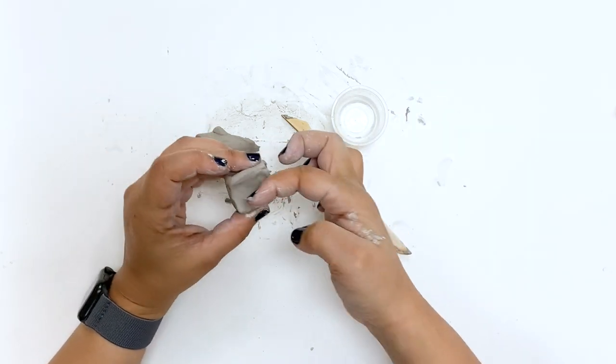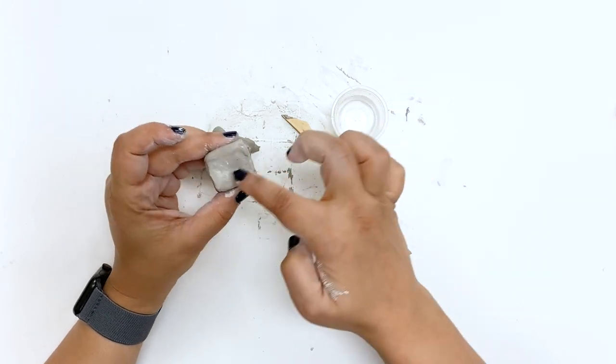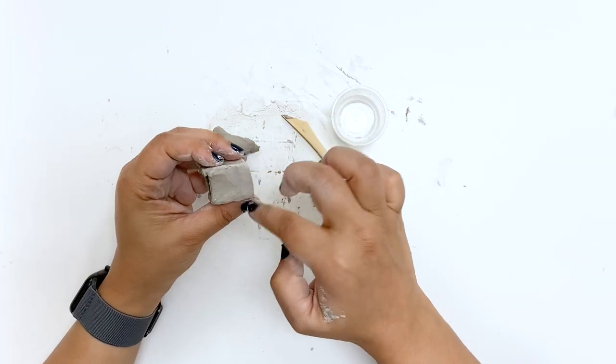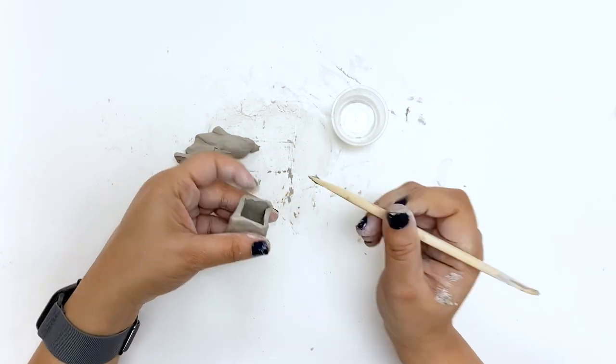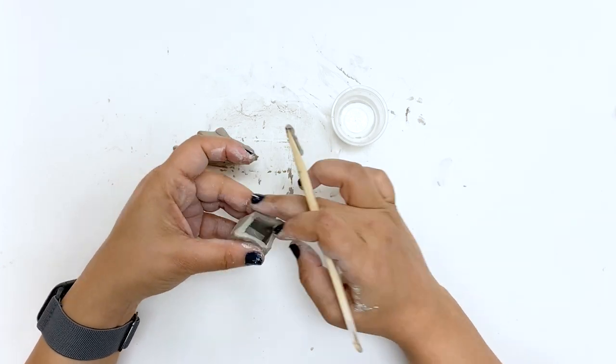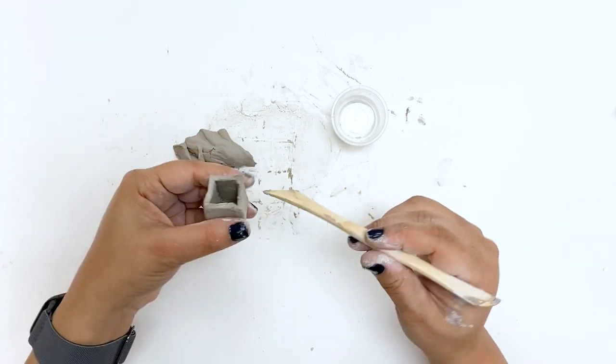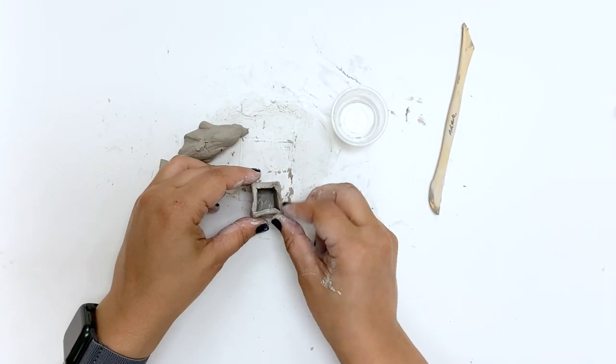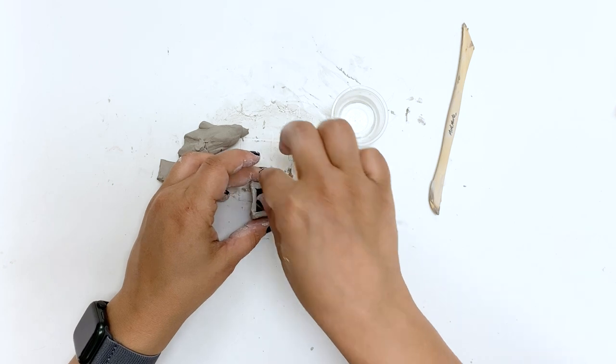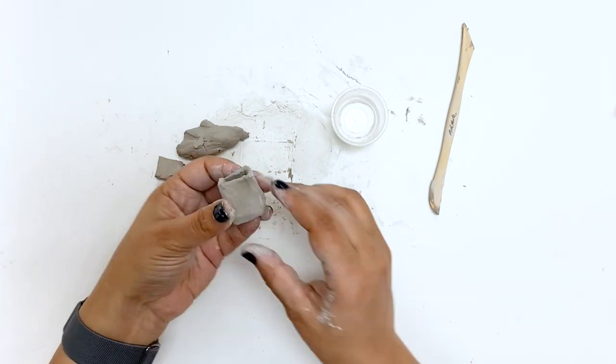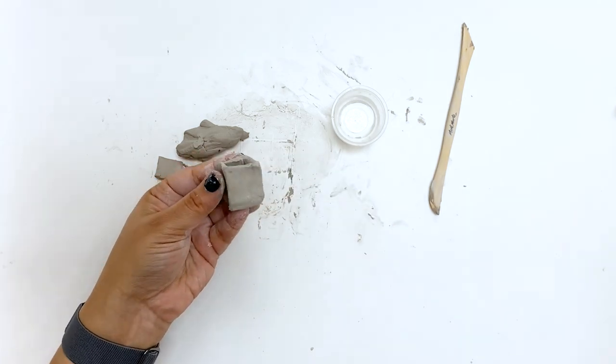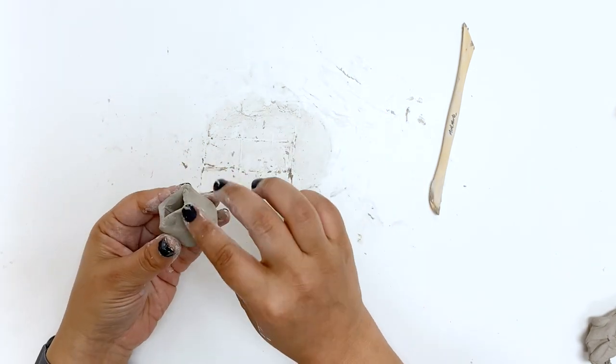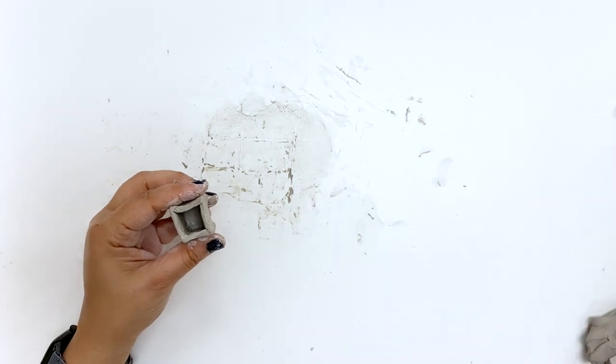You might be noticing that even as I'm trimming edges and smoothing out some areas that my piece looks imperfect. And I want to encourage you to let yours be imperfect, in part because, especially if you're learning something new, it's going to be imperfect the first time around, but also because the inspiration that we're taking from Francesca Alcantara's pieces is all about paper bags that have been used and reused and filled and refilled until they have texture and they show signs of wear.